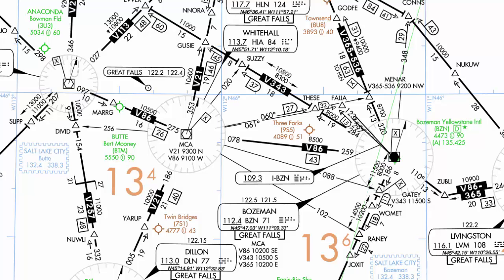First we'll get started with the MEA, or Minimum En Route Altitude. Minimum en route altitudes are depicted in black lettering along the course they correspond with. For example, on Victor 86, the MEA is 10,500 feet between the Whitehall VOR and the Copperstown VOR. This 10,500 feet is going to guarantee you obstacle clearance on that route along with navaid reception along the entire route, so you can be clear of all obstacles and navigate along that route.